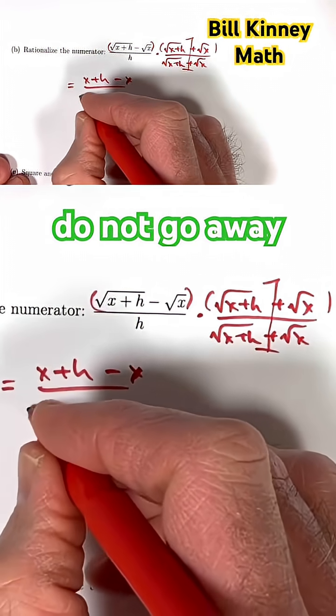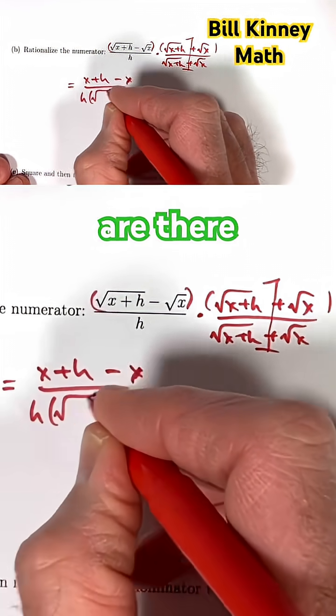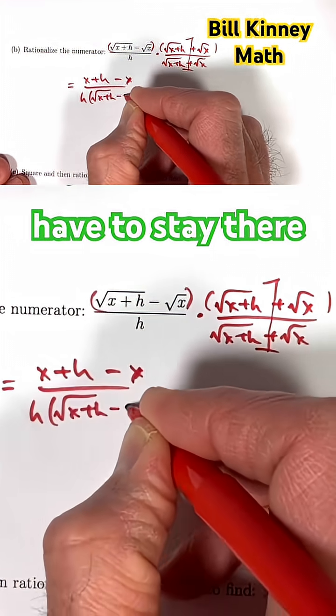Last times last gives you minus x. The square roots do not go away in the bottom. They are there. They have to stay there.